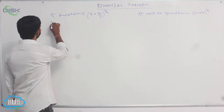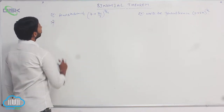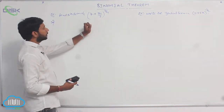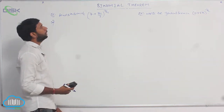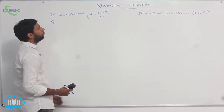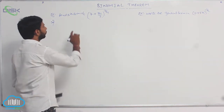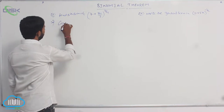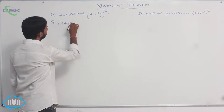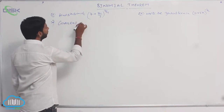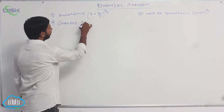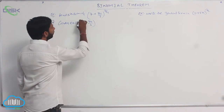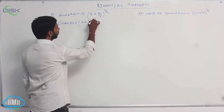Find the fifth term in the expansion of (7 + 8y/3) whole power 7/4. The given expansion is (7 + 8y/3) whole power 7/4.